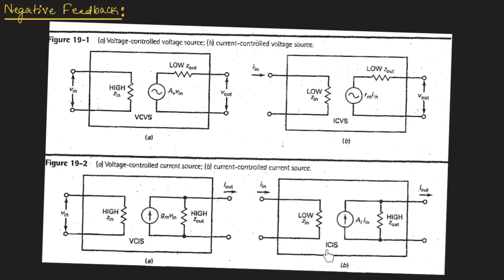Figure B shows the current controlled current source. Here, the input is current and the output is also current, which is why these amplifiers are known as current amplifiers. The gain is represented as AI. Input impedance is low and output impedance is high. Ideally, input impedance is zero and output impedance is infinity, but practically input impedance is low and output impedance is very high.